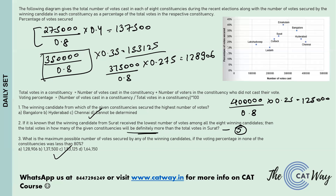So the maximum number of votes any winning candidate could have got is 1,53,125, and that candidate is from Bangalore. Hope you have understood the set — it was a fairly easy set. Thanks for watching the video.